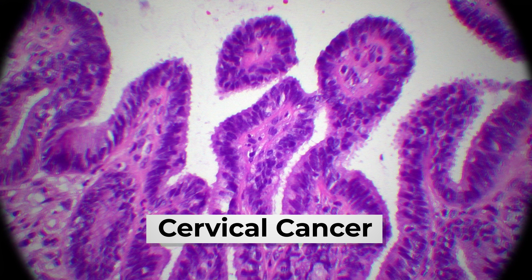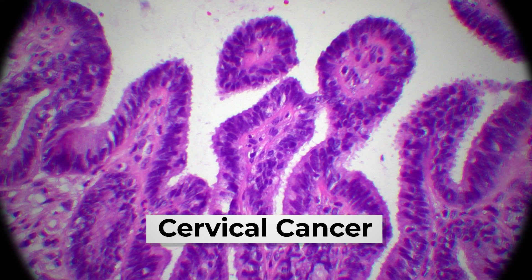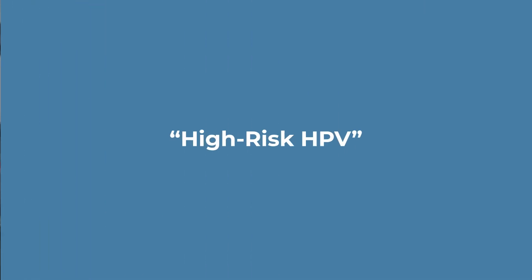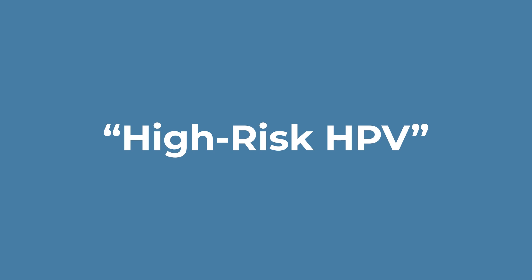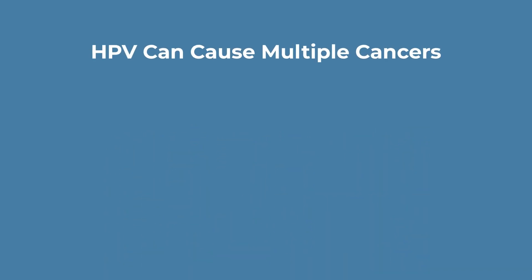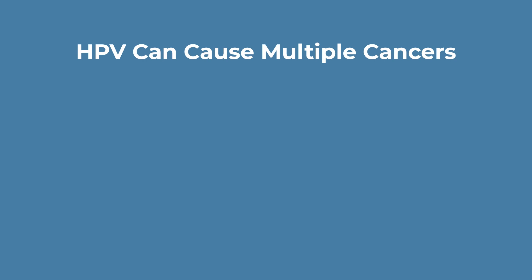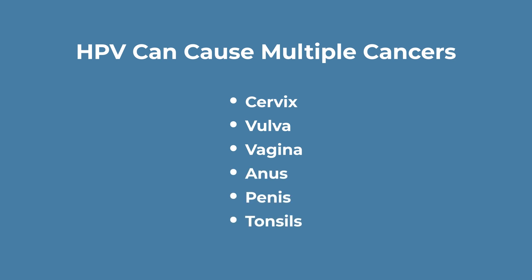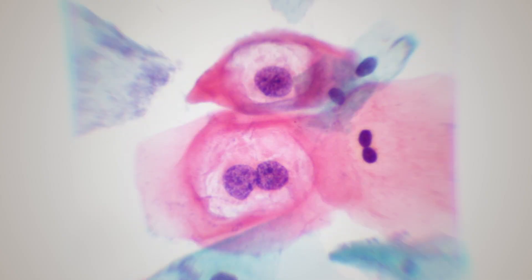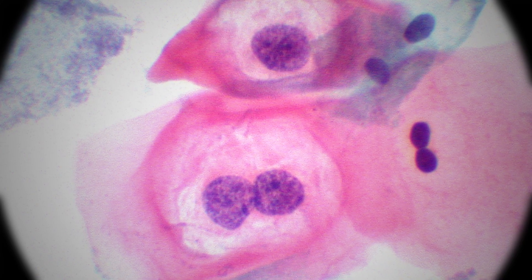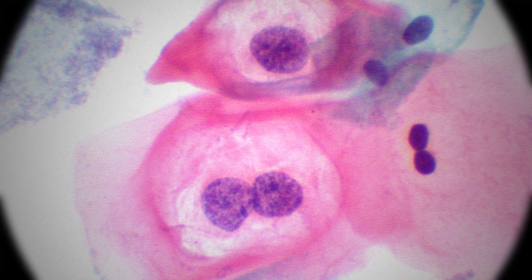The strains of HPV that have been found to cause cancer are grouped together into what we call high-risk HPV. It's important to know that HPV can be a cause of multiple cancers. High-risk HPV can cause cancers in the cervix, the vulva, the vagina, the anus, the penis, and the oropharynx, aka tonsils. It's also important to know that not all cervical cancers are caused by HPV. That's why cervical cancer screening is actually a combination of the pap test and the HPV test.